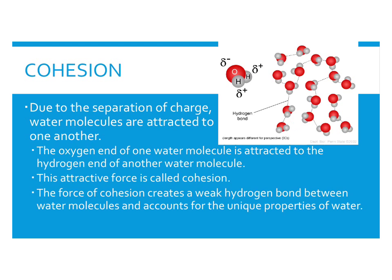The oxygen end of one water molecule is attracted to the hydrogen end of another water molecule, and they stick together — water is sticky. You can see the dotted lines indicating a water molecule is attracted to itself. These delta charges indicate a slight positive and a slight negative charge. The force of attraction holding water molecules together is called cohesion, and we also call this a hydrogen bond — a weak hydrogen bond between water molecules.